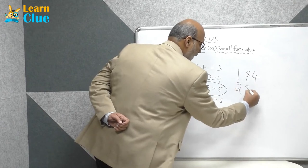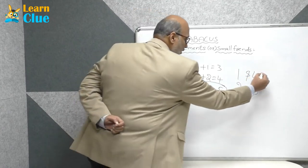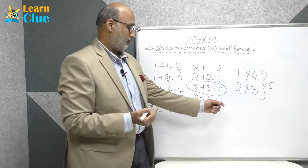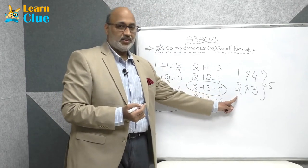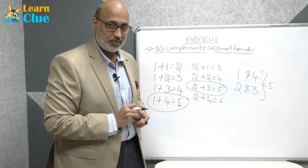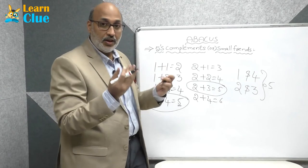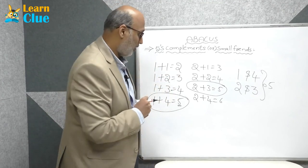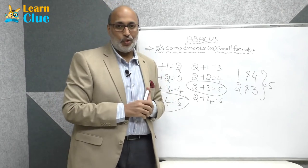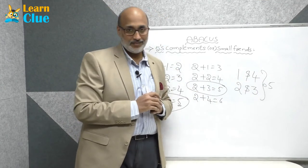So for the complements of five, we have a perfect group. One and four are perfect complements of five, and two and three are perfect complements of five. To help remember this easily, I'm going to tell you a small story so that you can recollect it easily.